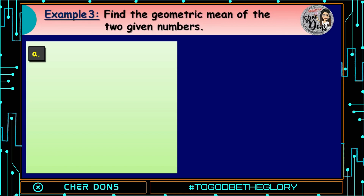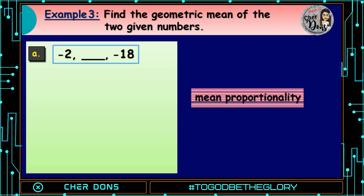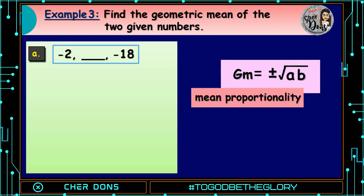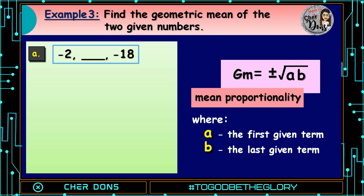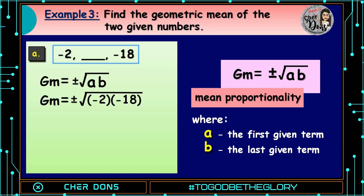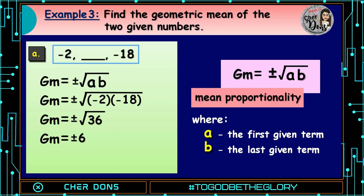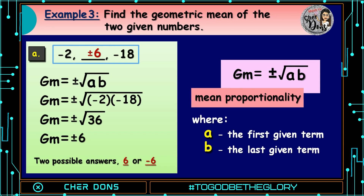Example number 3. Find the geometric mean of the two given numbers: negative 2, blank, and negative 18. This is a special case because we're looking for a single missing term. We're going to use the mean proportionality formula: positive or negative square root of a times b, where a is the first given term and b is the last given term. Using the formula: positive or negative square root of negative 2 times negative 18, which equals the square root of 36. So positive or negative square root of 36 equals positive or negative 6. We have two possible answers: positive 6 or negative 6.